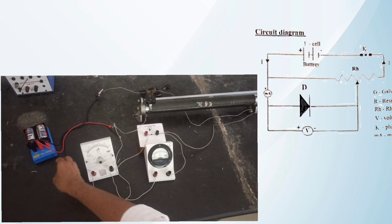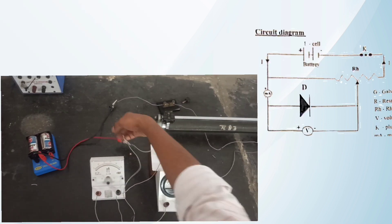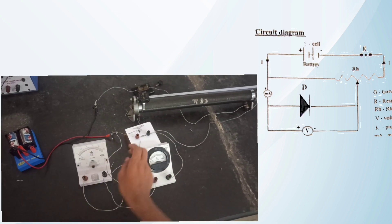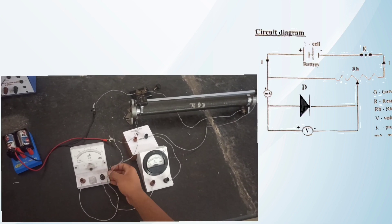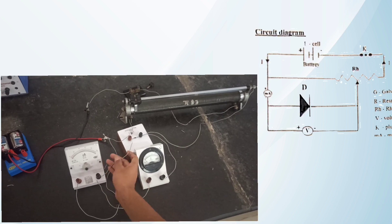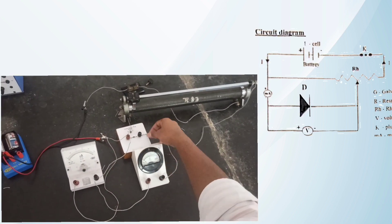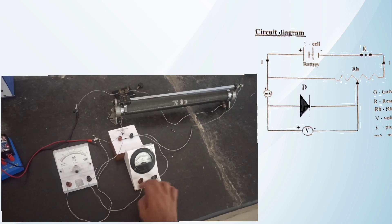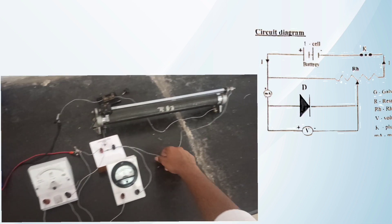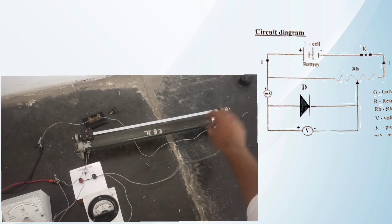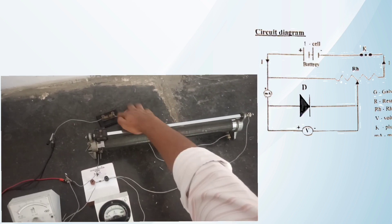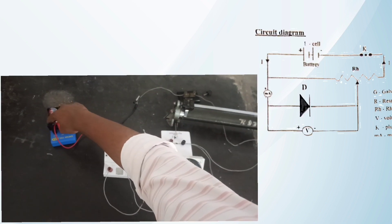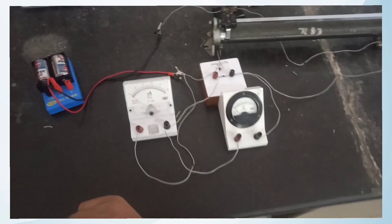Now the connections: From the positive of the battery we connect the rheostat lower end and milliammeter positive end. From the milliammeter negative side we connect the diode P side. From the N side of the diode we take two wires — one wire goes to the voltmeter negative, and from voltmeter positive another wire goes to the milliammeter negative. One wire from the diode goes to the upper side of the rheostat, and from the lower side of the rheostat we connect one side of the battery. The circuit is now complete.